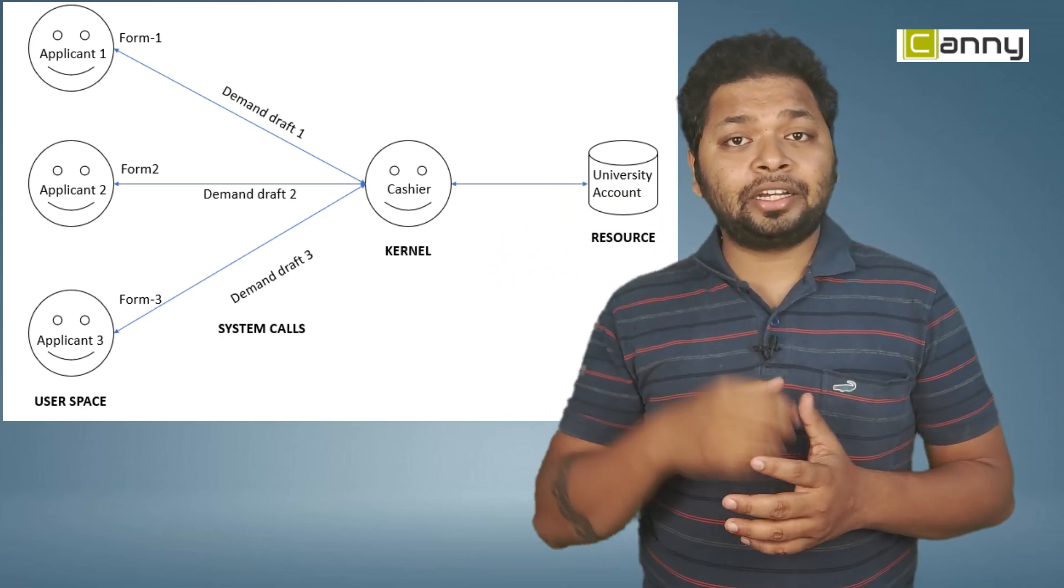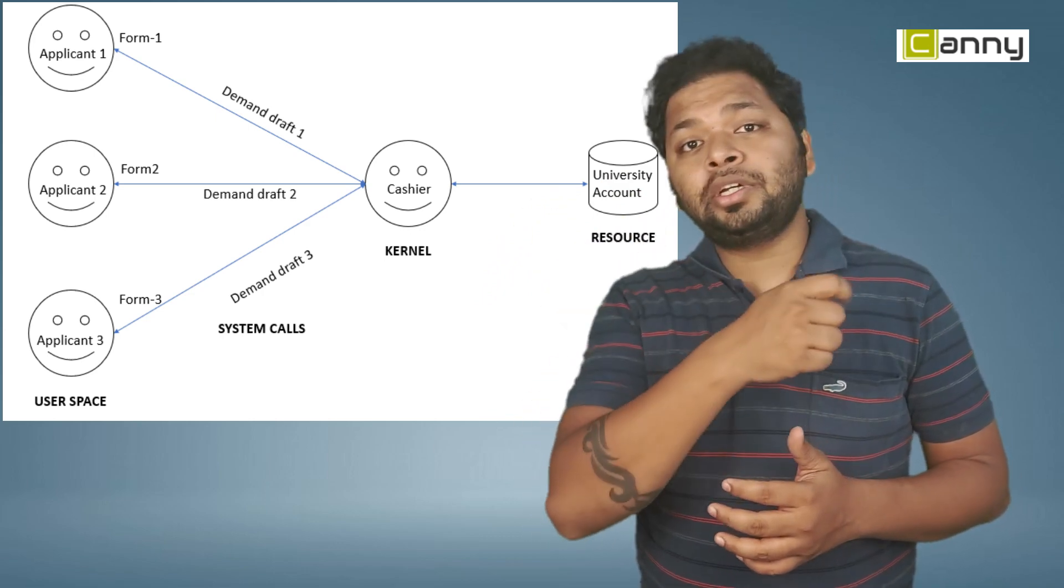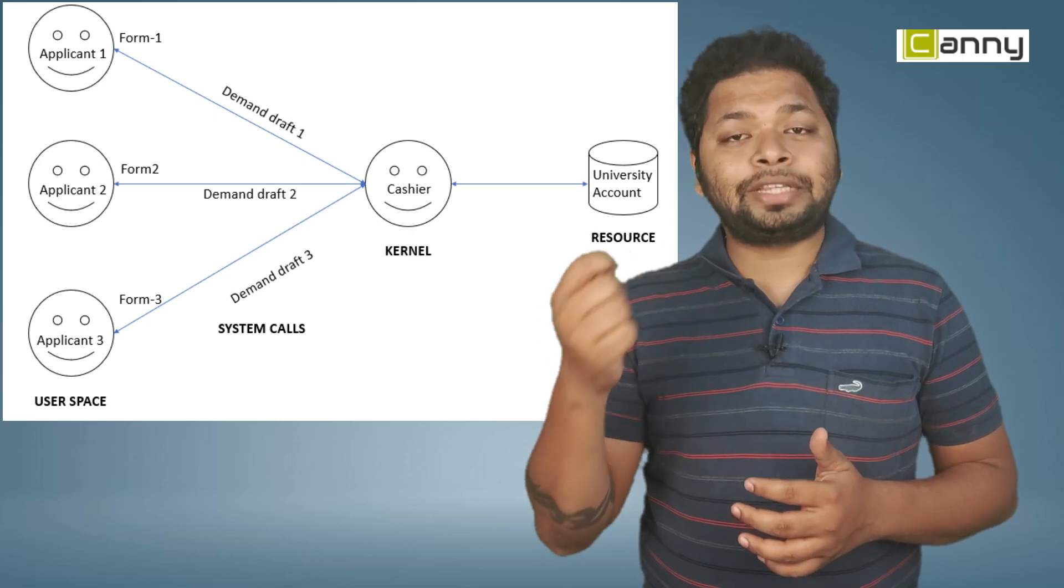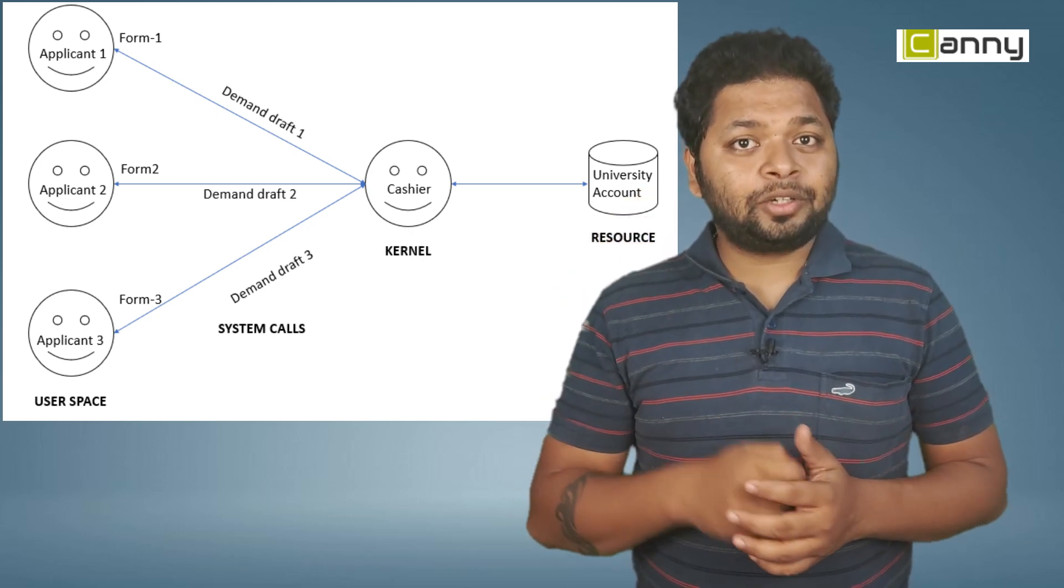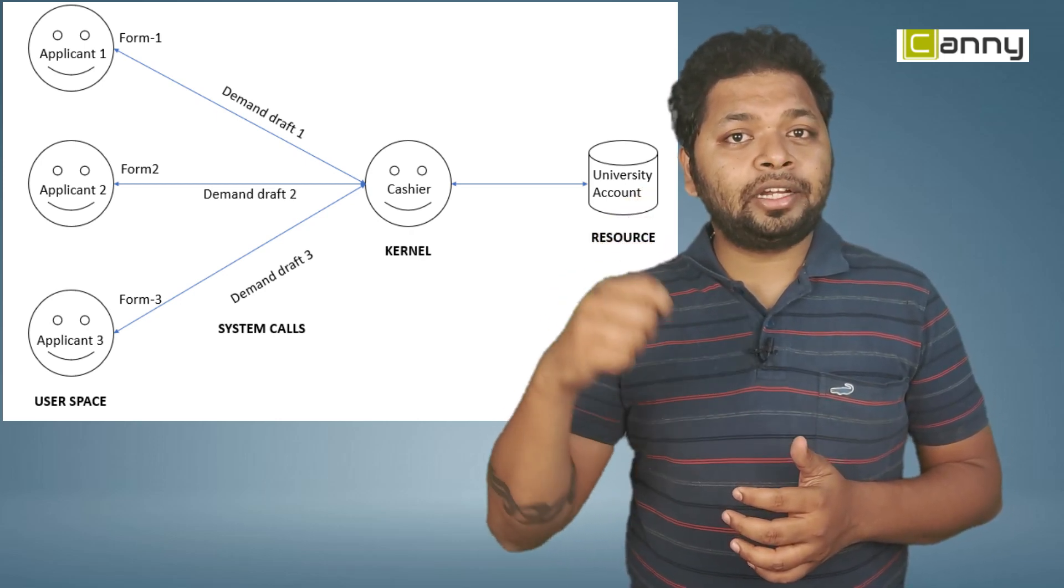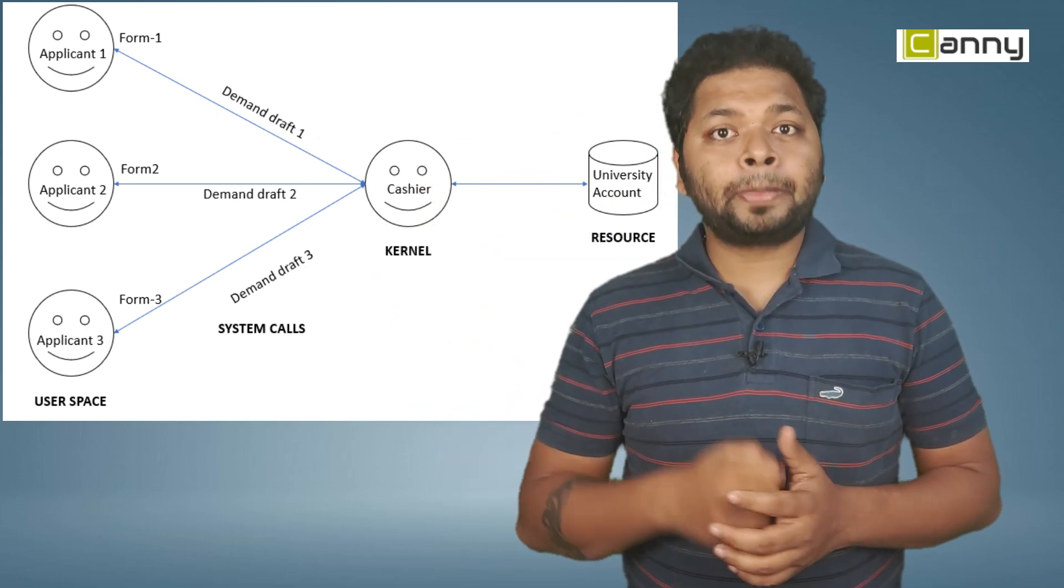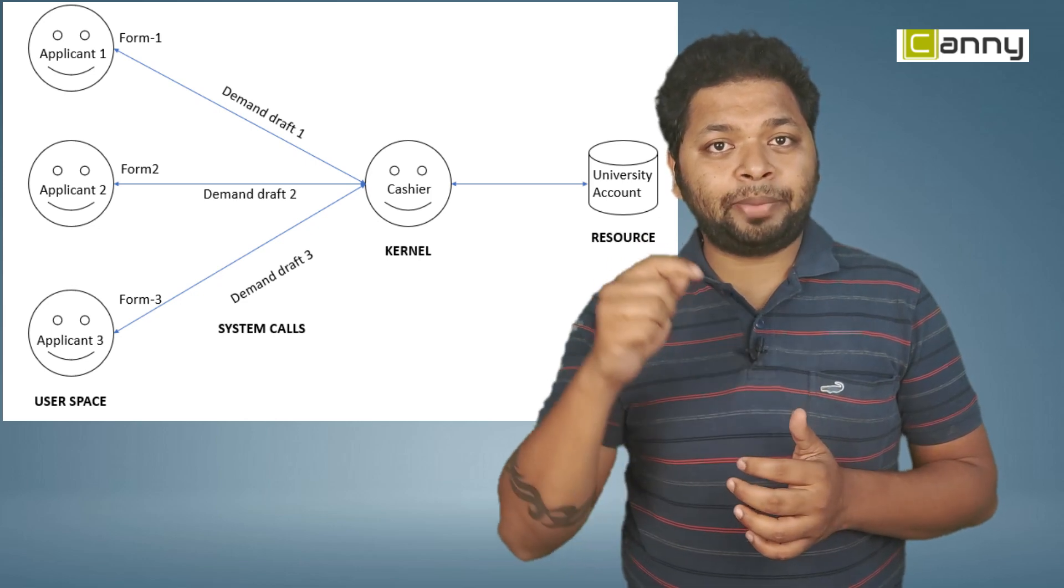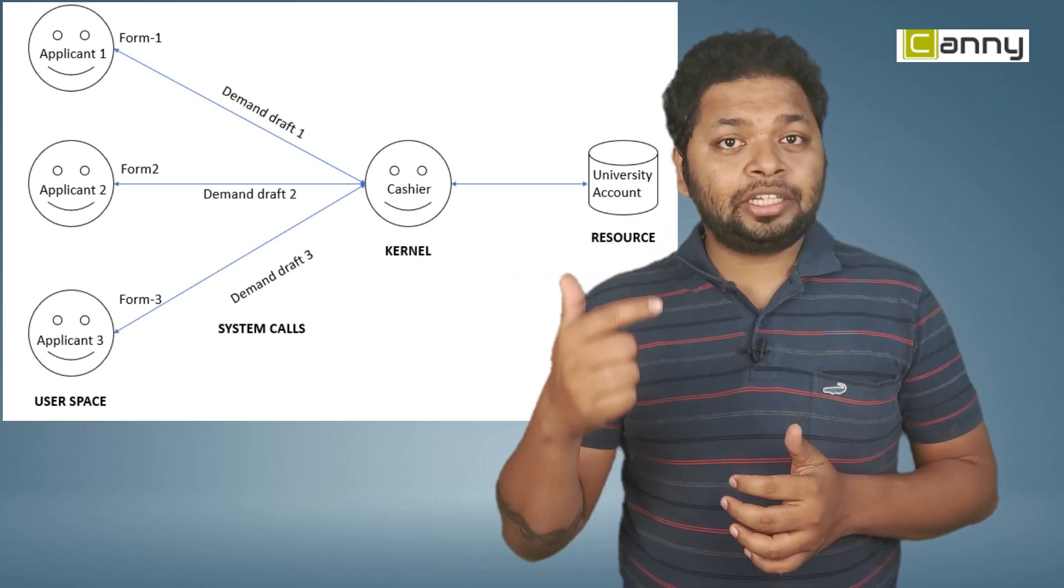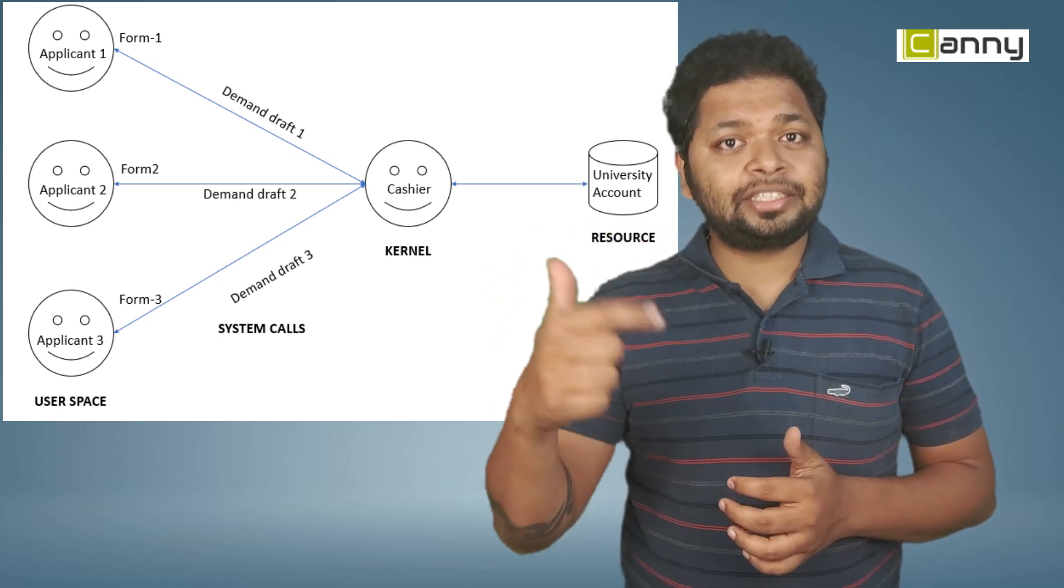So obviously, that resource will not be accessible to all the 100 users directly. For that, there should be somebody else who should carry this job and do the money transfer from your individual account and put it in the university's account. So, that job is done by the manager or the cashier. So here, the manager or the cashier is the kernel.